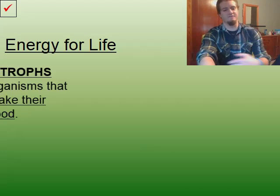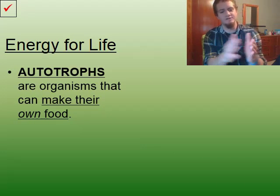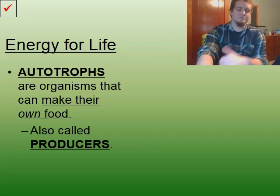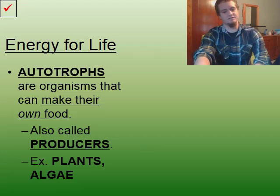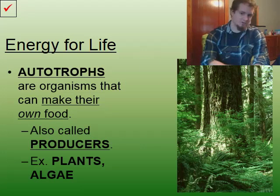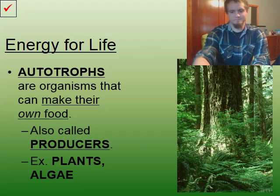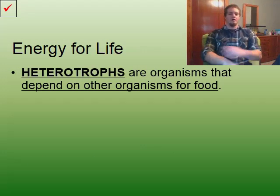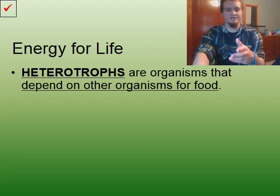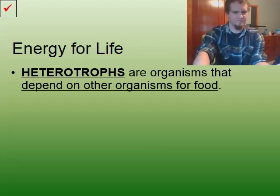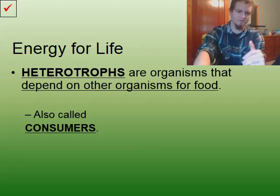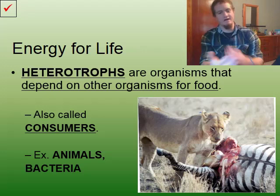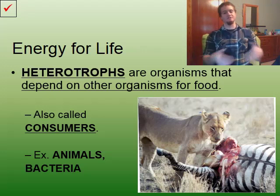So, energy for life. Autotrophs, like we said before, are organisms that can make their own food. We call these producers. Some examples include plants, like a tree, and algae. The second type we need to talk about are called heterotrophs. Heterotrophs are organisms that depend on others for food. We call these consumers. Examples would be things like animals, bacteria — anything that has to consume others to get their energy.